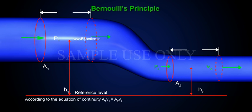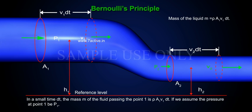According to the equation of continuity, A1 V1 is equal to A2 V2. In a small time DT, the mass M of the fluid passing the point is rho A1 V1 DT.